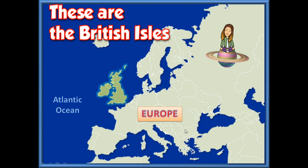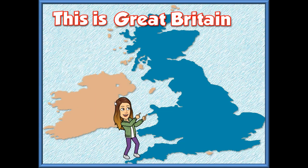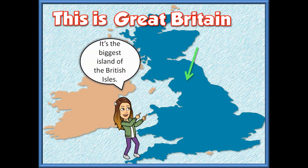So we live in Europe. Serbia is here, and in the west are the British Isles. There are two big islands which form the British Isles. The first one, the dark blue one, is Great Britain — and it is the bigger of the two islands.